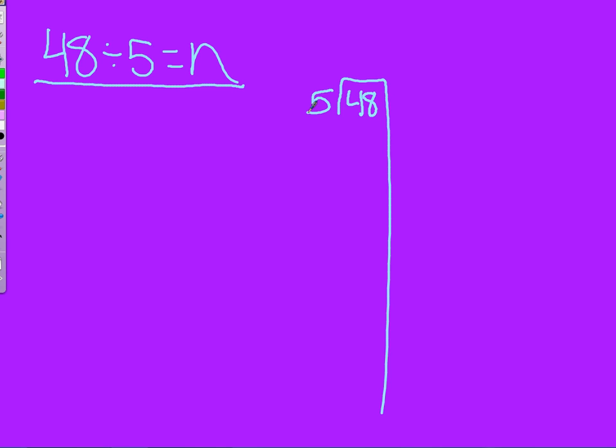Then choose a multiplication problem that fits. Here we are doing 5 times 6. You put it under and next to the 48. Then you put 30 under the 48. Next you subtract the 30 which will get you to 18.